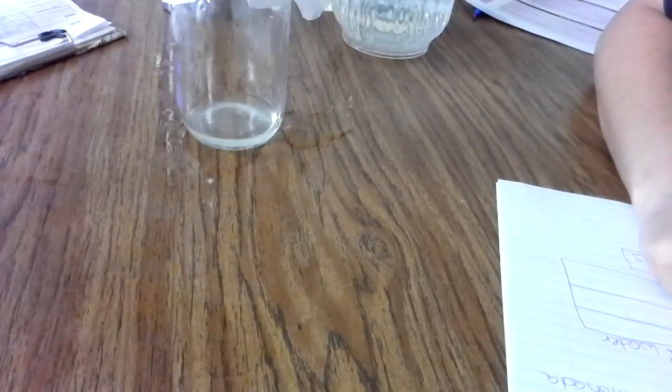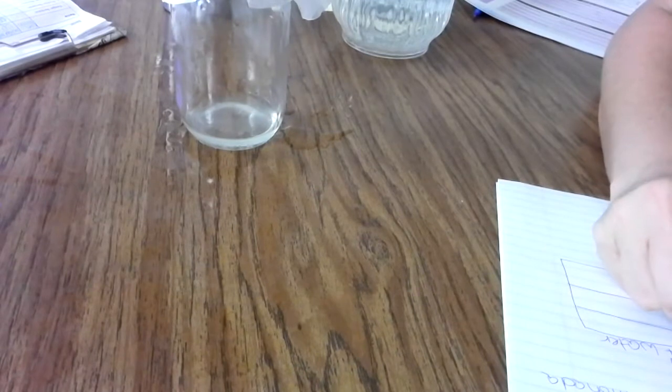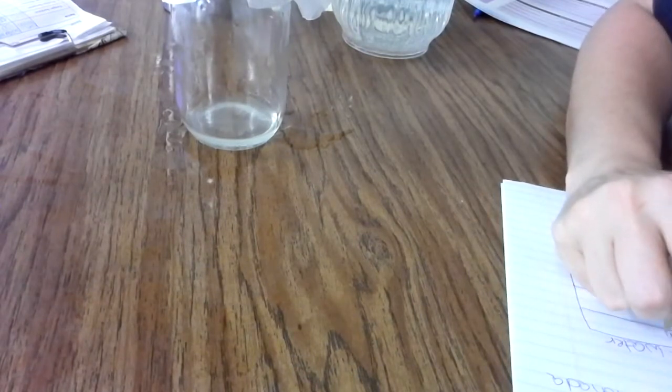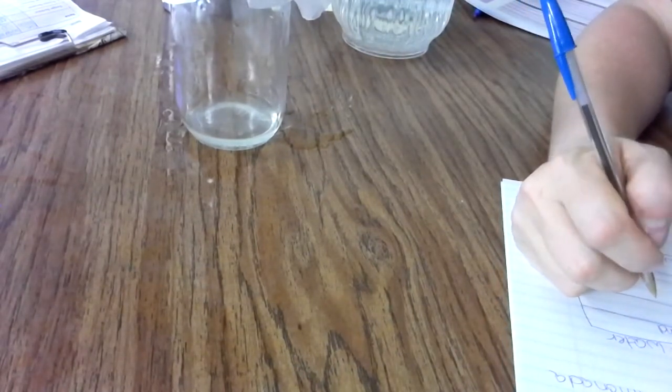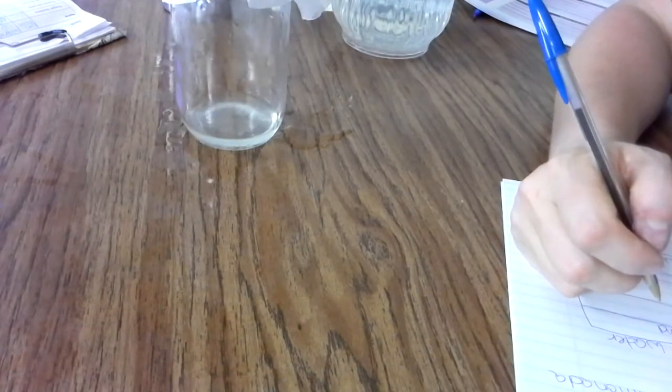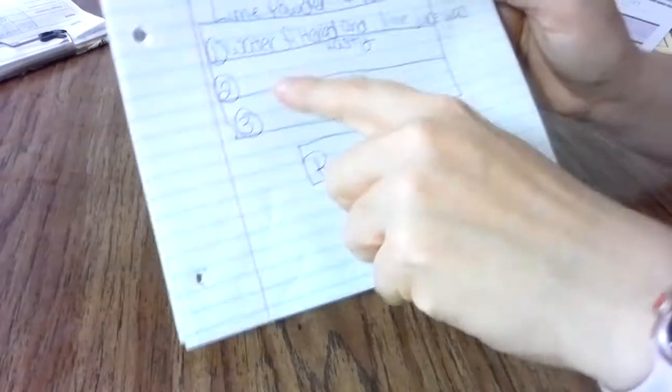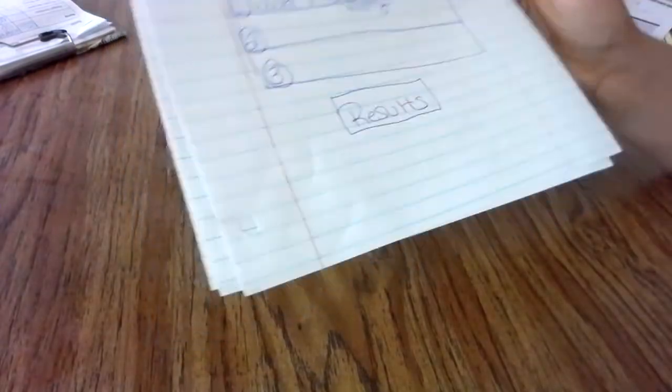All right, so test one: lime powder and water. What happened? What were our results? What can I write down? You can say the water filtered and limeade juice was tasty. Tasty. In other words, we can say it worked, right? So water filtered and lime juice was tasty. In other words, it worked.